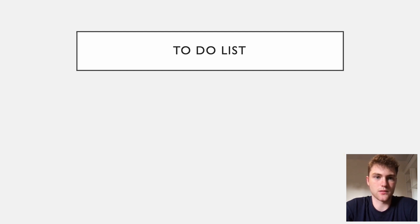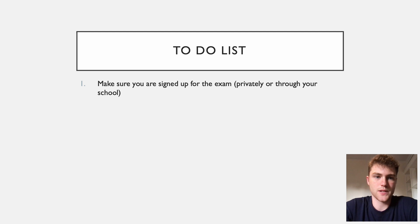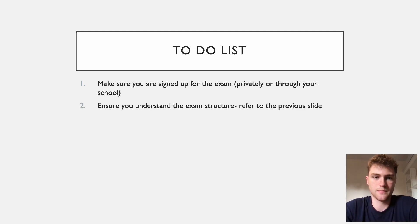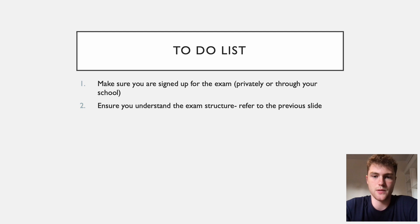This is what you should be doing now if you're just starting your revision. First, make sure you're signed up — if you're not signed up you won't be able to do the test and your application to Cambridge won't be successful. Sign up either privately or through your school. Most schools are testing centres for these tests, but some aren't, so if yours isn't, you'll need to find somewhere else. Understanding the exam structure is really key so that when you come to the exam you can allocate the correct time per question and know what's coming.